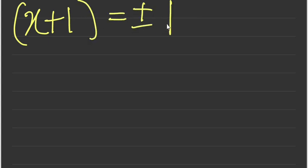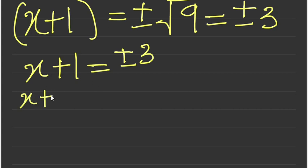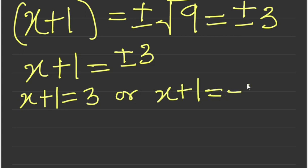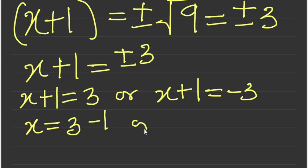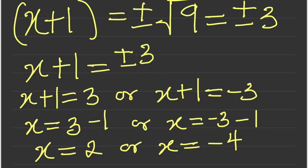So we have x + 1 is equal to plus or minus the square root of 9, which is equal to plus or minus 3. This means x + 1 = 3 or x + 1 = -3. Therefore, x = 3 - 1 = 2, or x = -3 - 1 = -4. The final answers are x = 2 or x = -4.